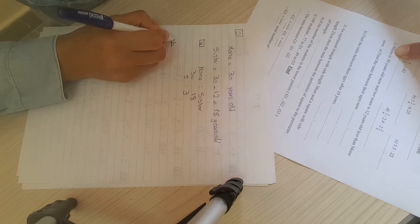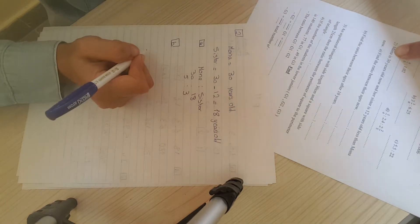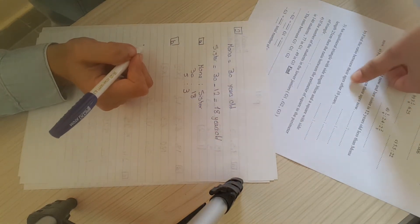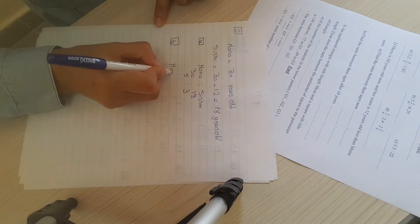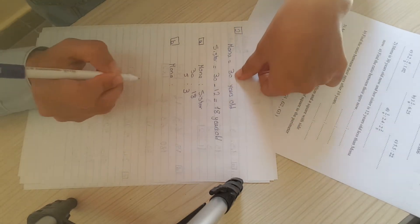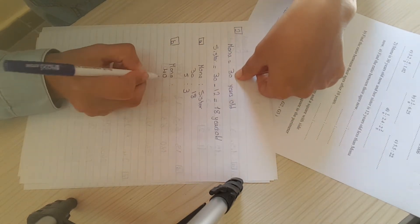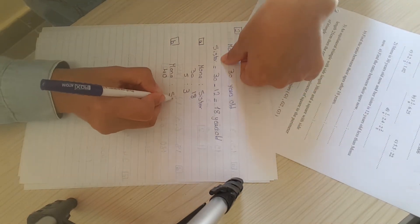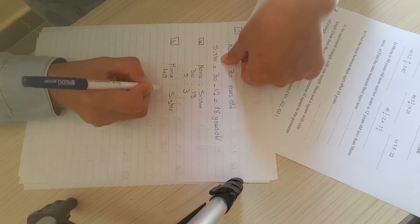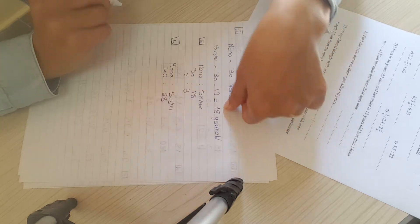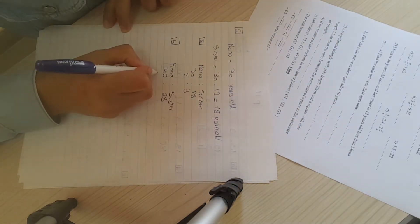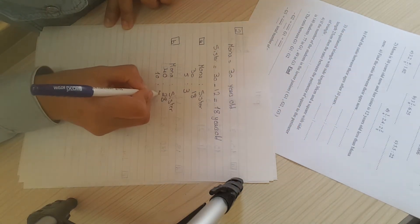In question B, find the ratio between their ages after 10 years. After 10 years, Mona is now 30, so she will be 40. Her sister is 18, so after 10 years she will be 28. After simplifying, it will be 10 to 7.